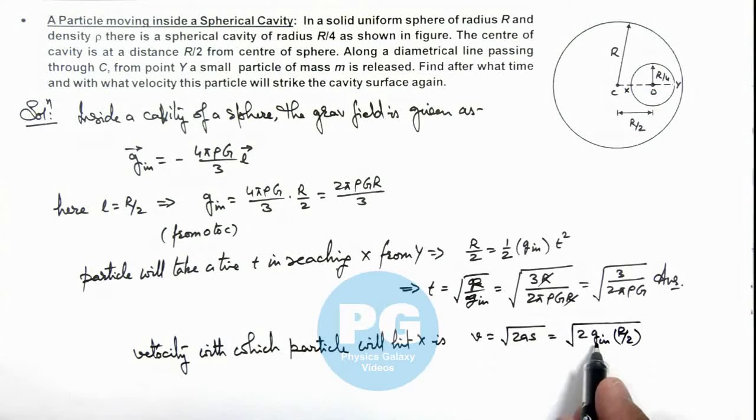So on substituting the value of g inside, the speed we are getting is root of 2πρGR²/3. That is another answer for this problem.